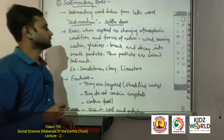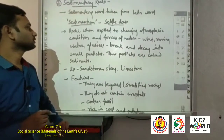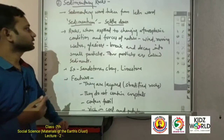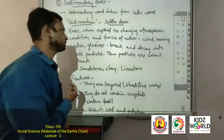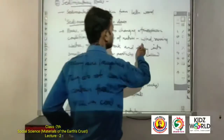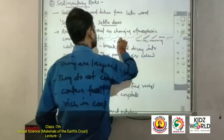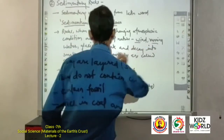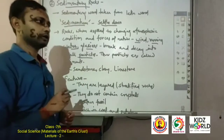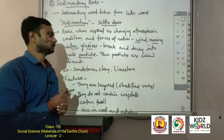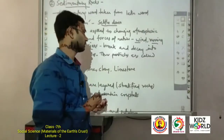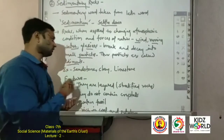Rocks when exposed to changing atmospheric conditions and forces of nature — such as wind, running water, and glaciers — break and decay into small particles. These particles are called sediments. These small pieces are known as ausad, and these sediments go on to form sedimentary rocks.